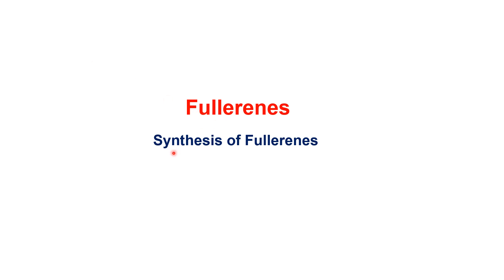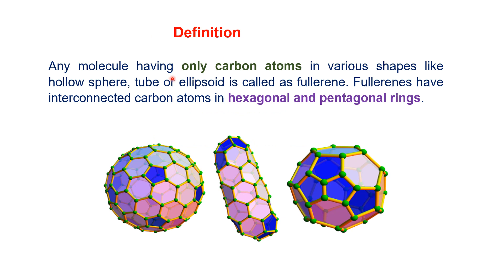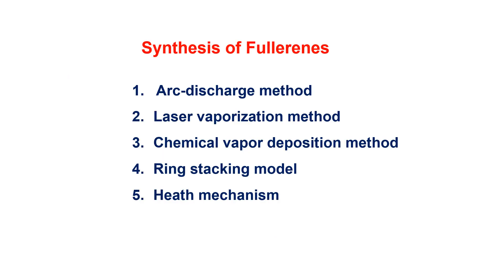Part 2 of the video will be about synthesis of fullerenes. Fullerenes are molecules that have only carbon atoms and exist in various shapes; these carbon atoms are interconnected in hexagonal and pentagonal ring structures. Synthesis methods include arc-discharge method, laser vaporization method, chemical vapor deposition method, ring-stacking model, and the Heath process.